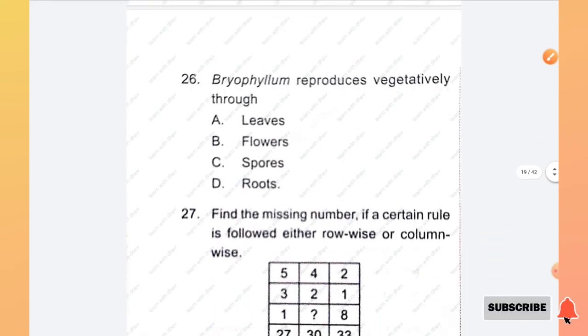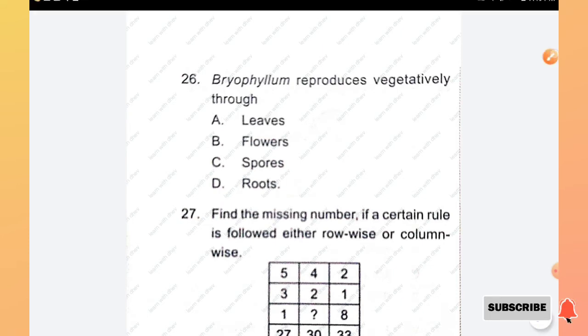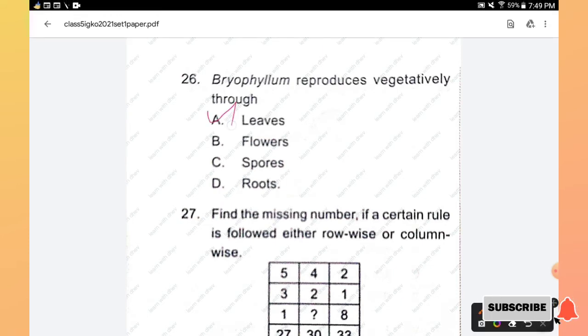Question number 26: Bryophyllum reproduces vegetatively through: options are leaves, flowers, spores, roots. The answer is option A, through leaves. The vegetative reproduction of Bryophyllum takes place in leaves. Hence option A is the right answer.